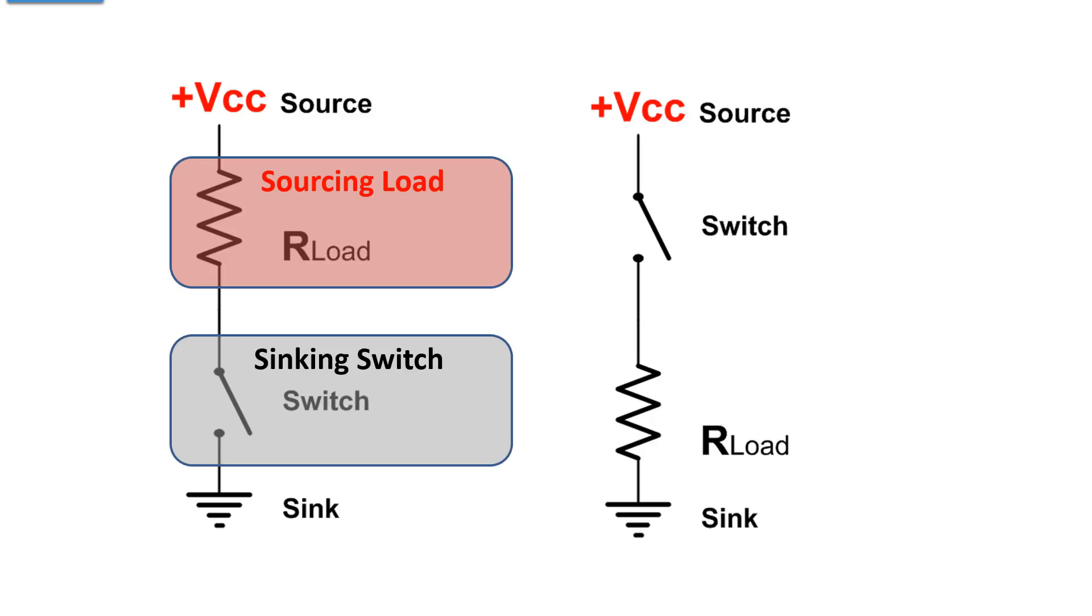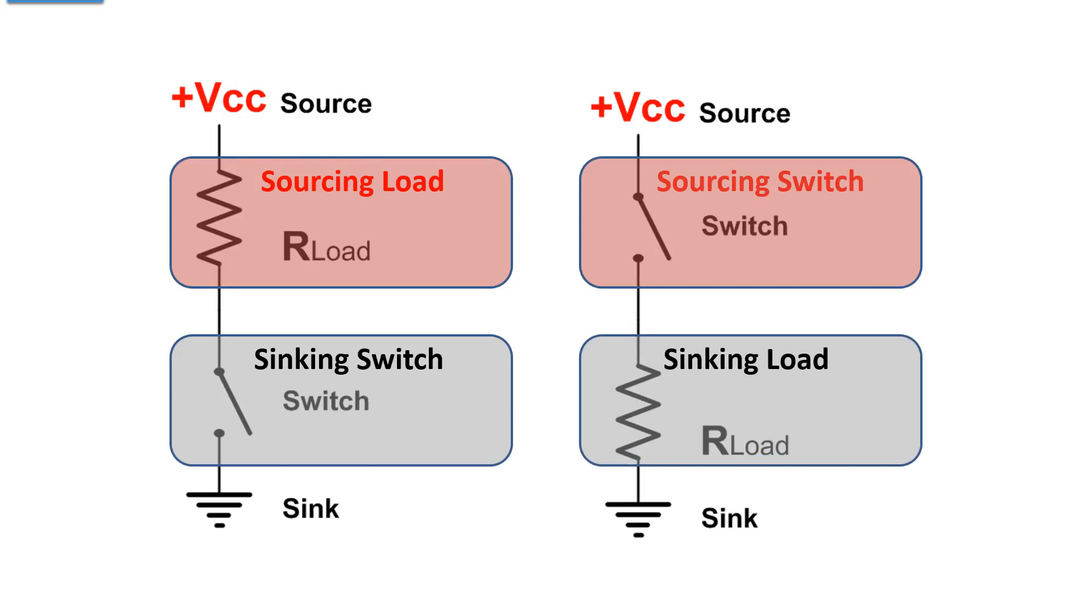If you swap the control switch and the load positions in this circuit, the switch is now sourcing and the load is sinking. It's that simple. Whichever of the two, the control or the load, whichever of the two is closest to the source is the source. Whichever is closest to ground or the sink is the sink.